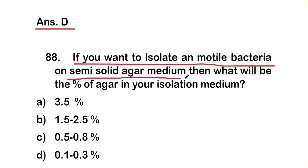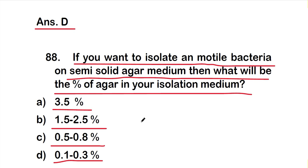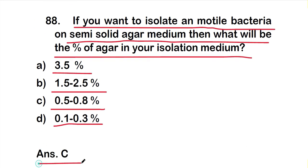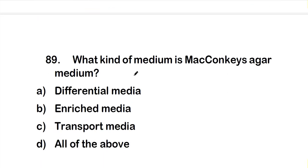Question number 88: If you want to isolate motile bacteria on semi-solid agar medium, what will be the percentage of agar in the isolation media? Option A: 3.3–3.5%, option B: 1.5–2.5%, option C: 0.5–0.8%, option D: 0.1–0.3%. The right answer is option C — 0.5 to 0.8 percent agar is used to isolate motile bacteria on semi-solid agar medium.